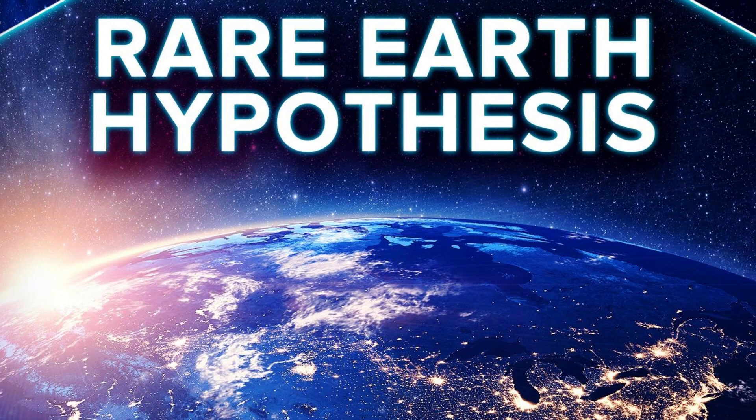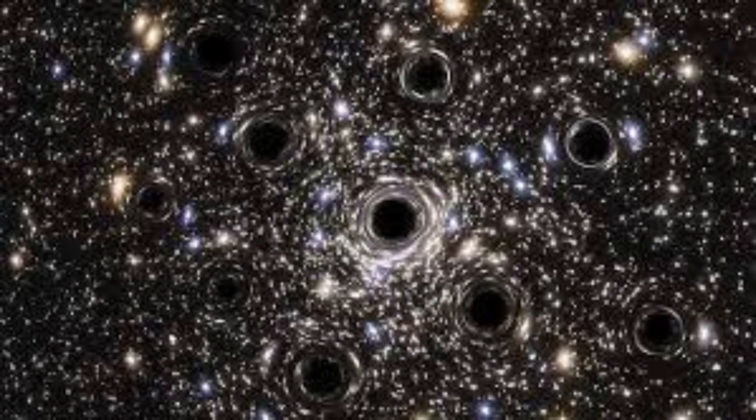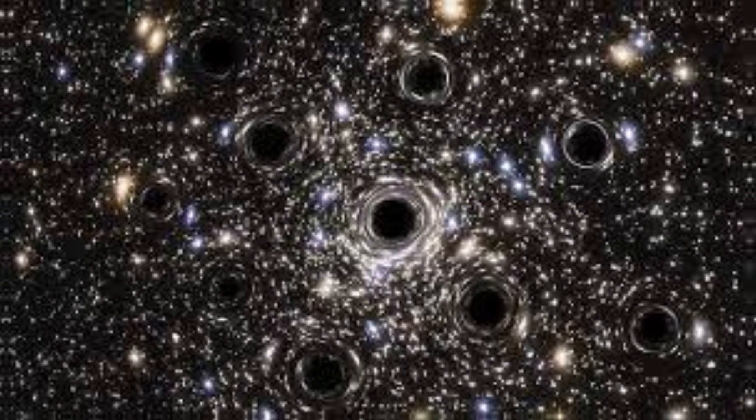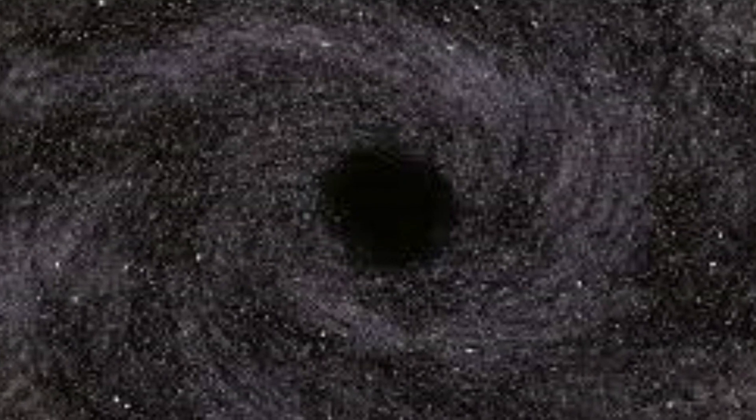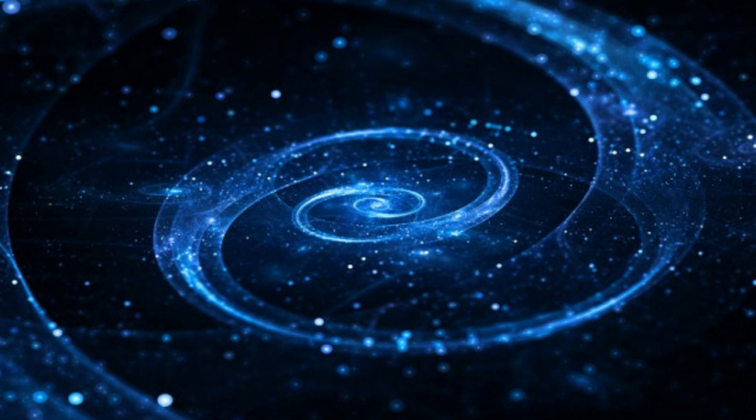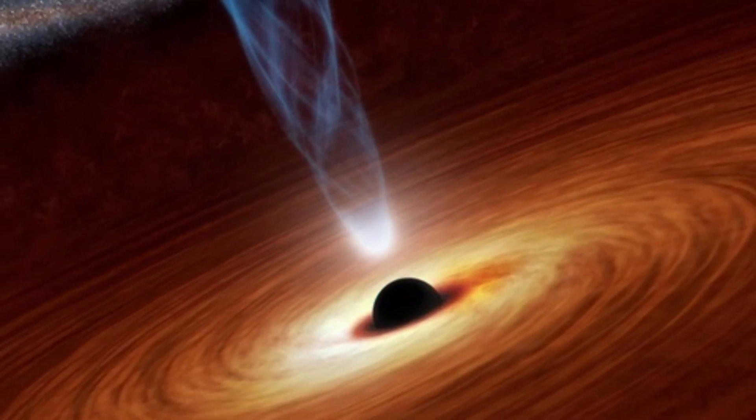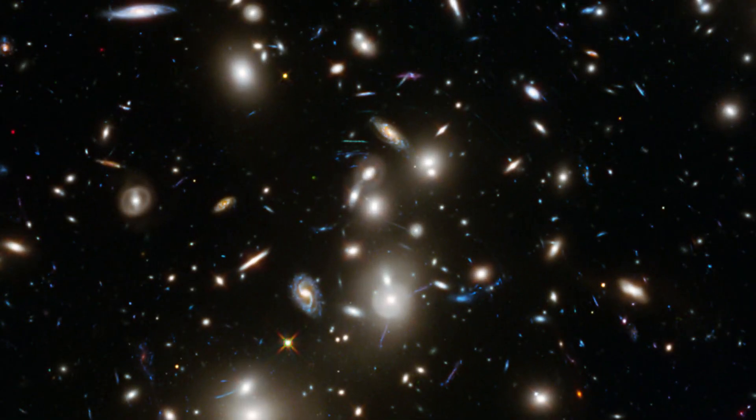Their hypothesis suggests that a universe where primordial black holes act as dark matter might have characteristics akin to our own. Lehman asserts that the existence of primordial black holes and dark matter isn't inherently contradictory. These black holes have been proposed as a potential type of dark matter. He finds it remarkable how numerous scientific hypotheses can be explored using this single model.